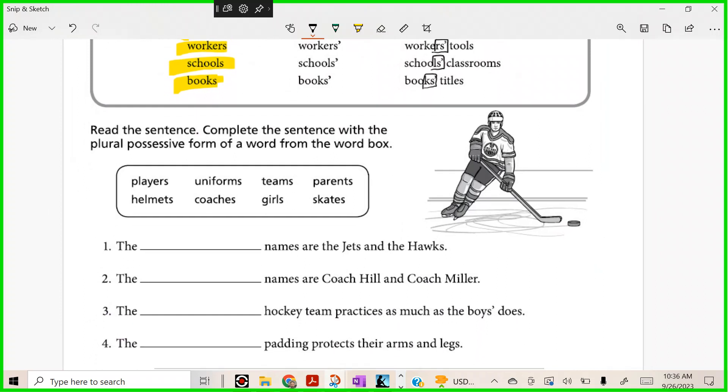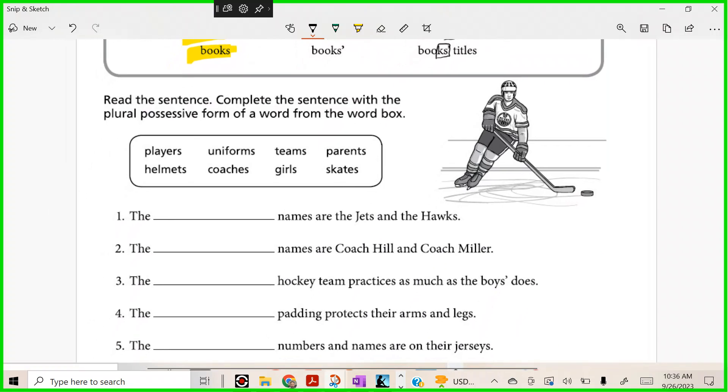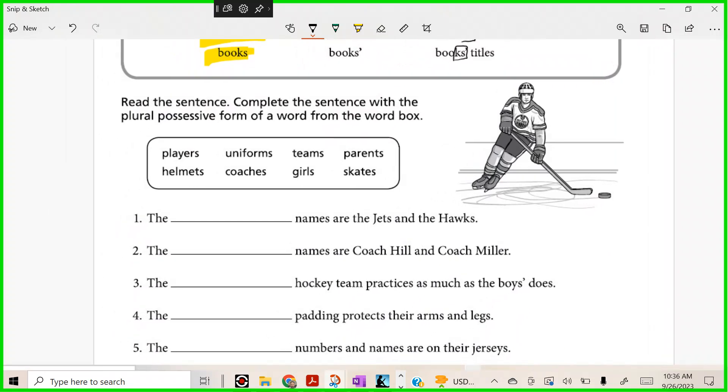Read the sentence. Complete the sentence with the plural possessive form of the word in the box. The blank names are the Jets and the Hawks. How many teams, Rocco? So how do we show possession of the names of two teams? Spell teams for me, Rocco.